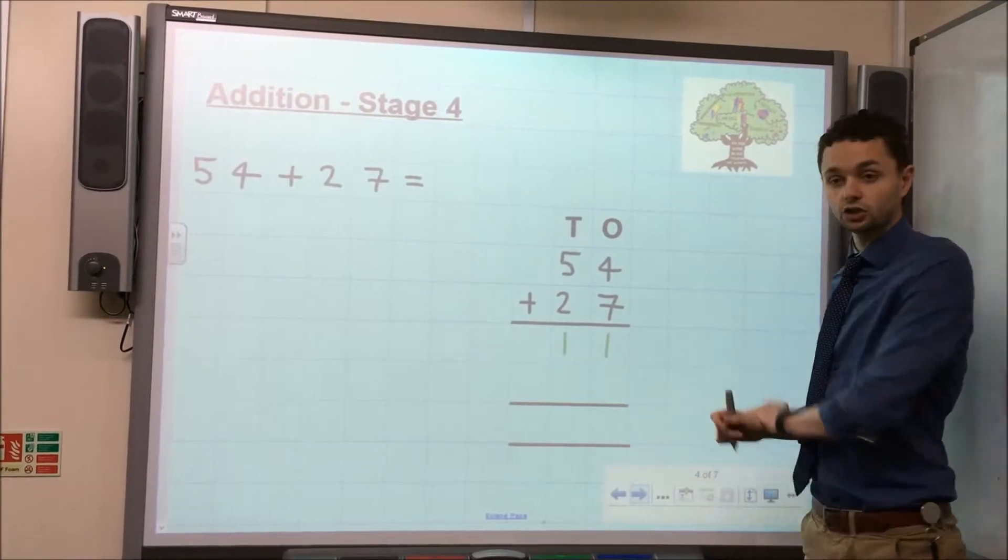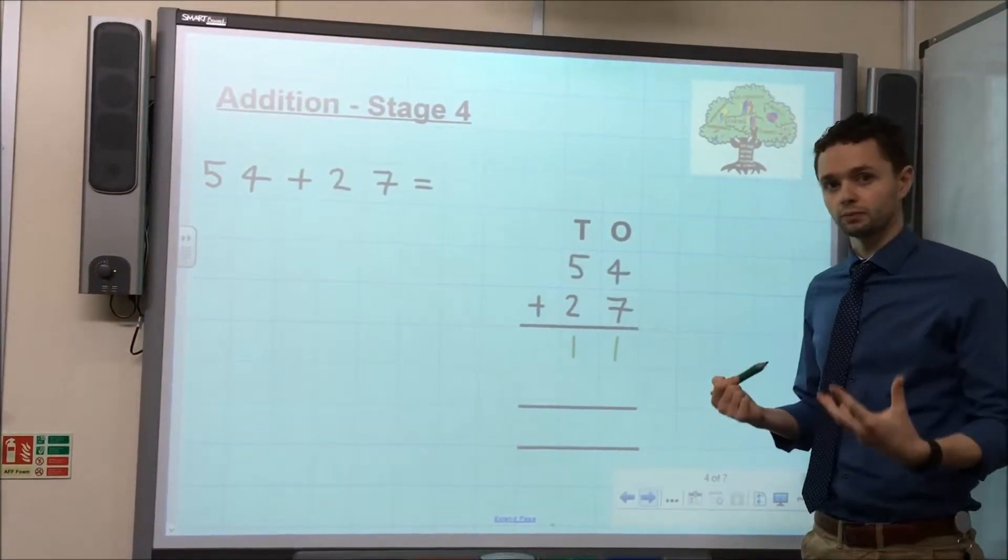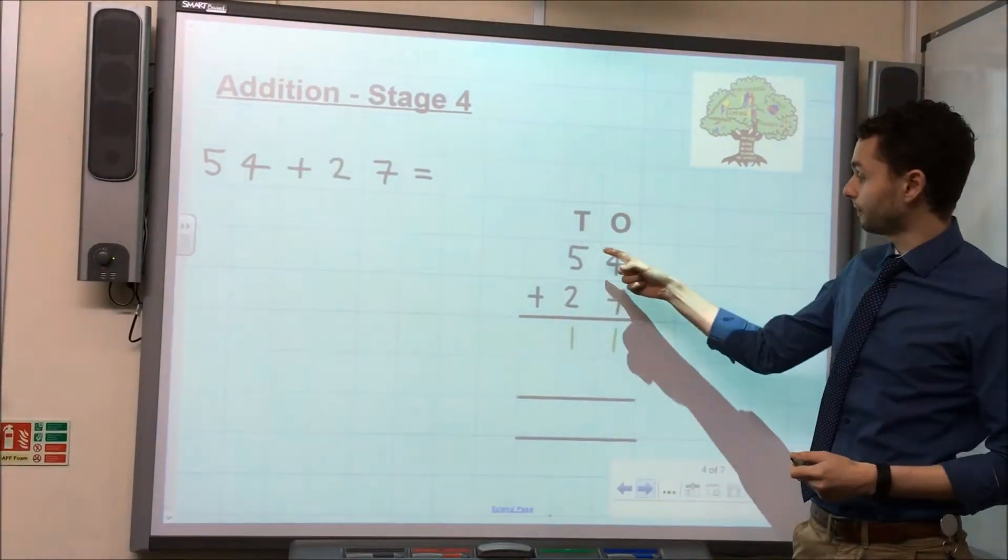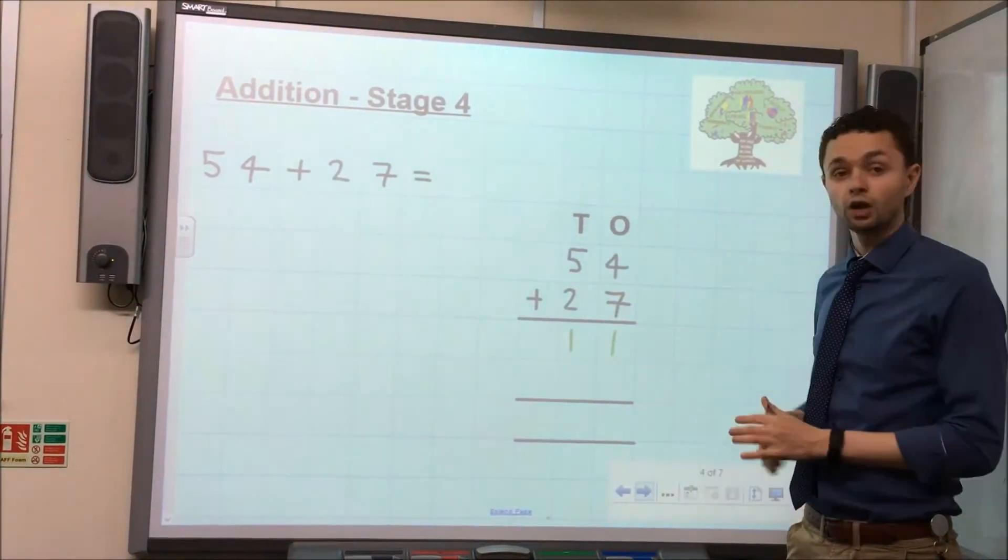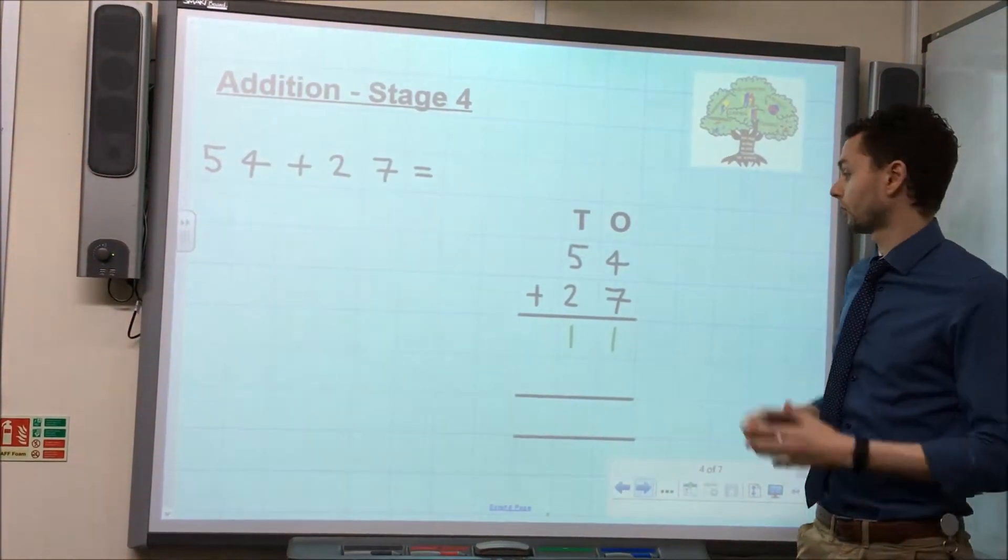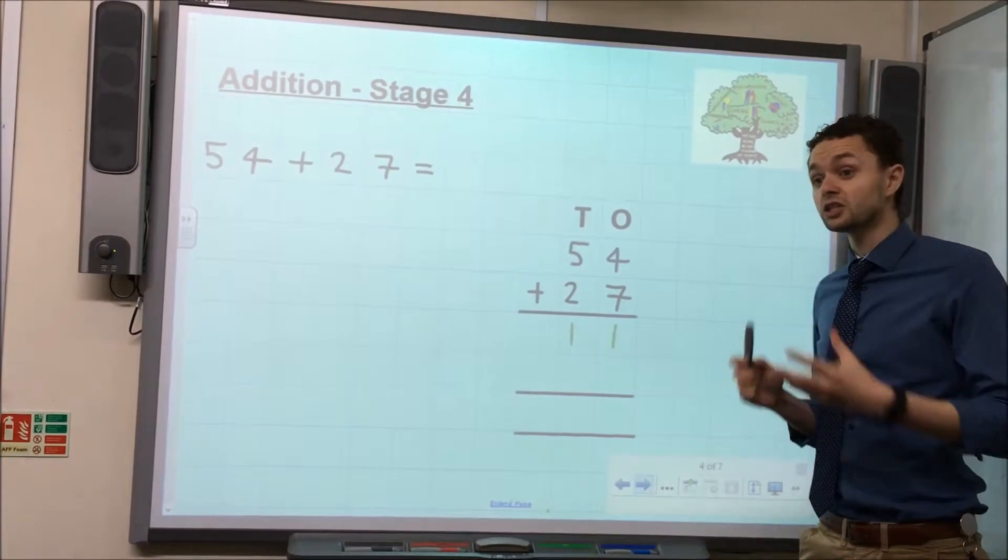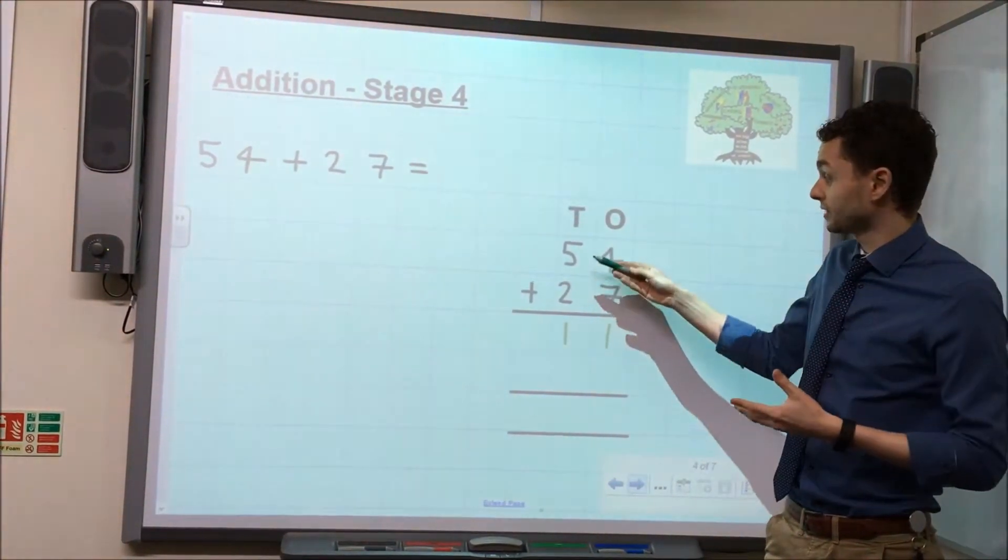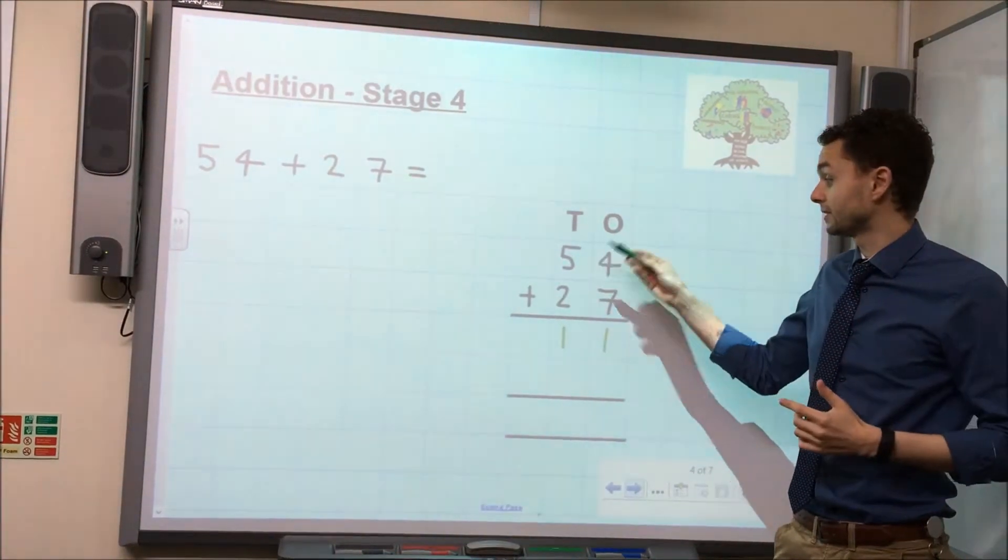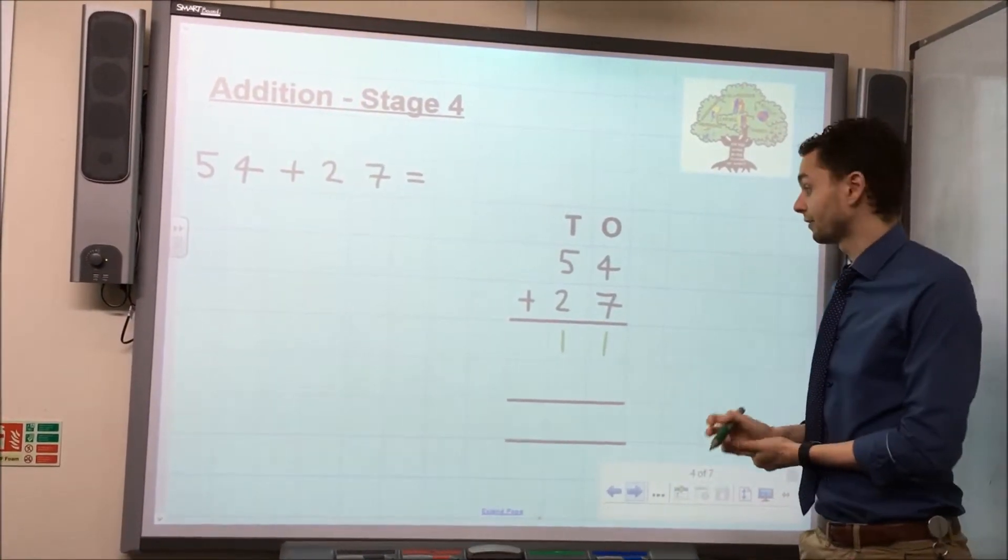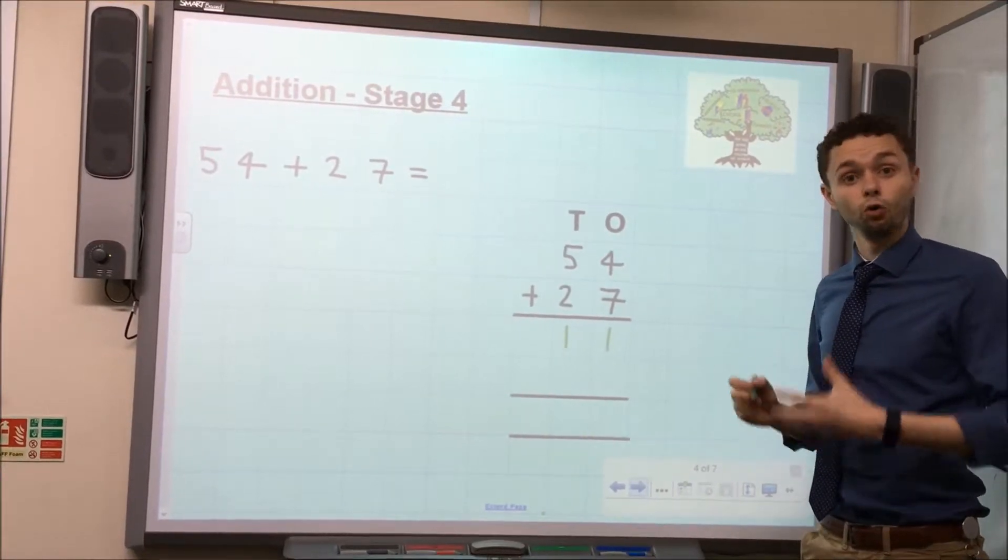Then we move on to the next line, which is actually the most important part of the calculation in terms of place value. Here, we have got five 10s and two 10s. We haven't got just five and two, and that's a common misconception. Children will often just go, five and two is seven, which isn't correct in terms of this calculation, because we have got five 10s and two 10s, or 50 and 20. So, if we add those two together, we are left with seven 10s or 70.